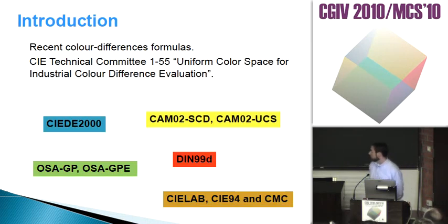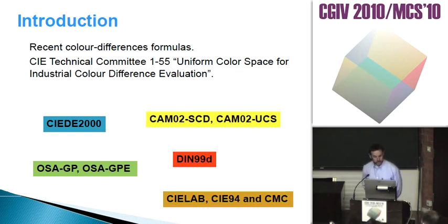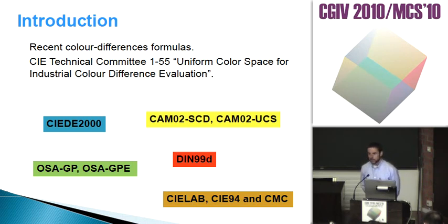This communication is in the same framework as the one I presented yesterday, in the framework of Technical Committee 155 about uniform color space for industrial color difference evaluation. We are testing different color difference equations with new experimental data. Yesterday it seemed that DIN99D is a very good formula, but it is not always the best.